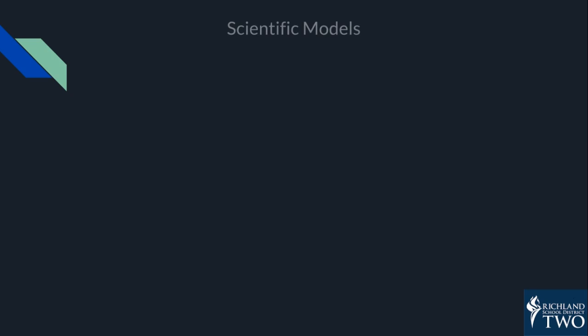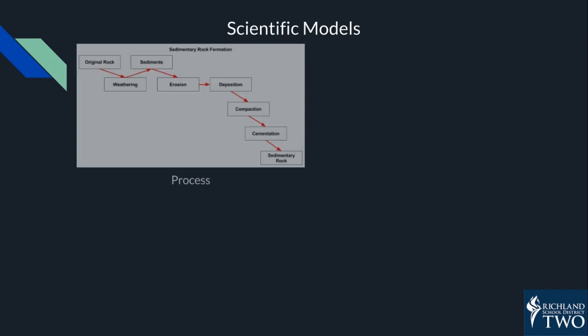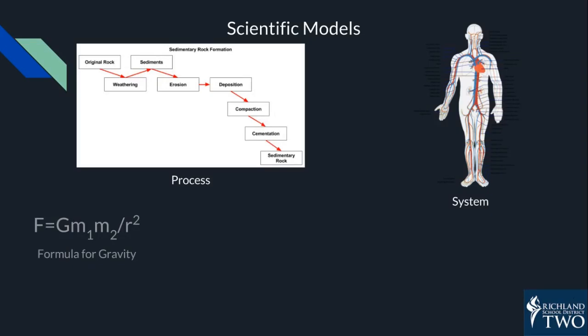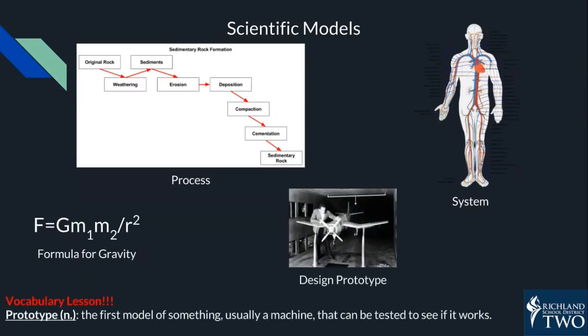A scientific model can represent a natural process. It can also represent a system. It can represent a natural phenomenon. A scientific model can also represent a prototype or design for a solution you want to test.